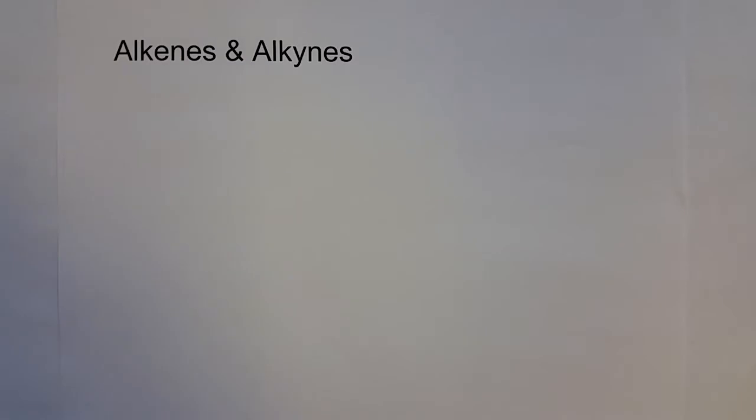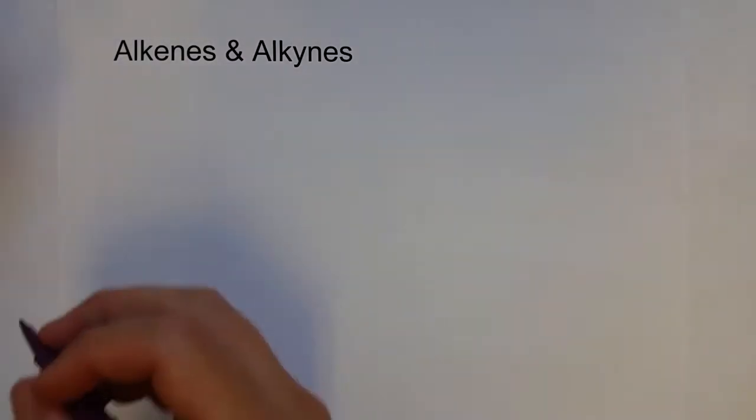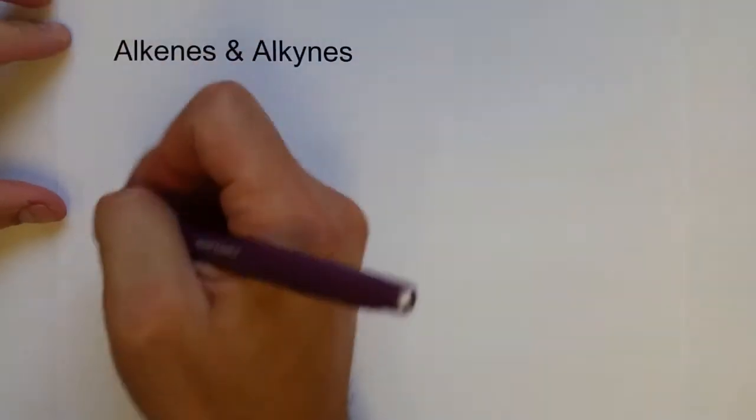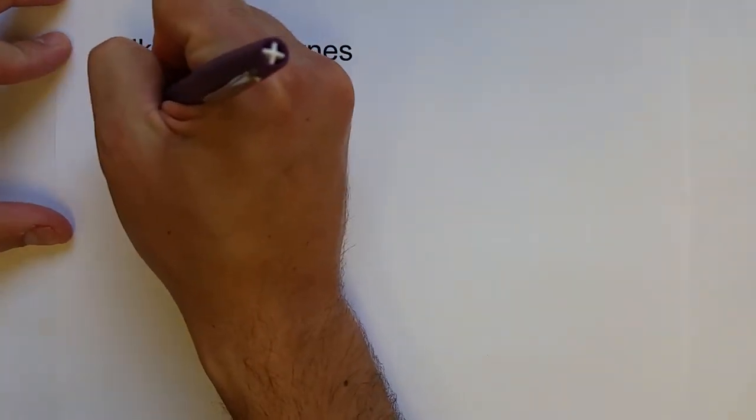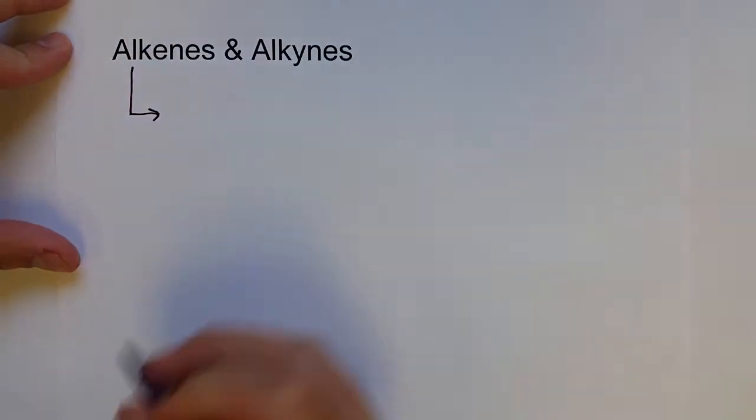Previously we talked about alkanes, which were hydrocarbons that contained all single bonds. Now we're going to talk about hydrocarbons that can have double or triple bonds — those are alkenes and alkynes.